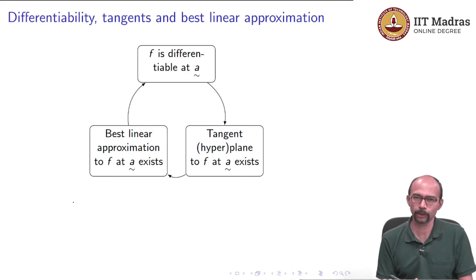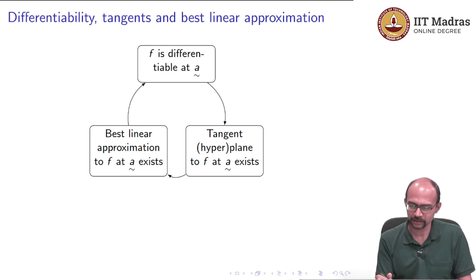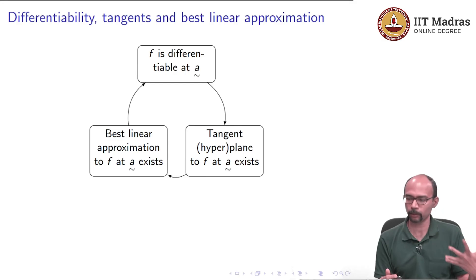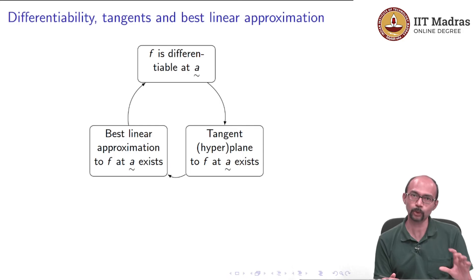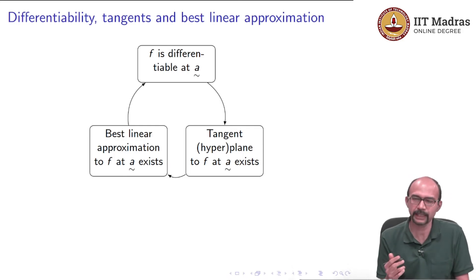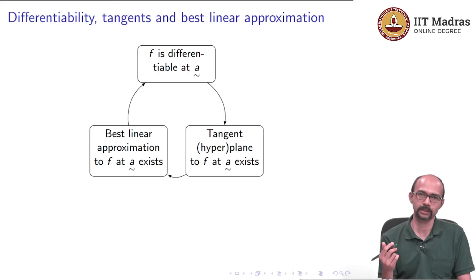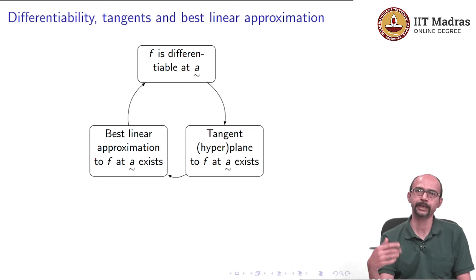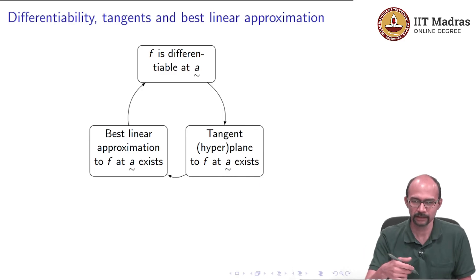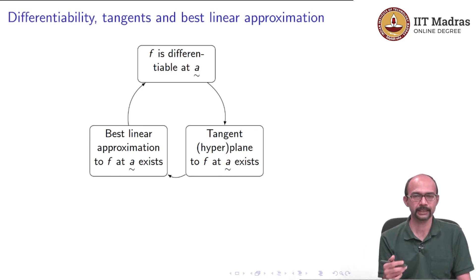Checking that this limit exists is somewhat hard. As we have consistently done throughout the course, whenever I wanted to talk about the tangent hyperplane, the hypothesis we made was a bit different — we took a stronger hypothesis. I had the hypothesis that the partial derivatives of the function exist and are continuous in a ball around ã. The fact is that if this happens, then f is differentiable at ã. That is why I kept making that hypothesis — because I did not want to define differentiability until the very end.